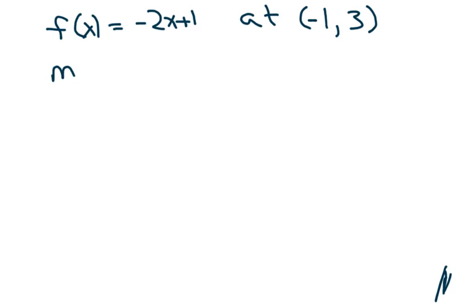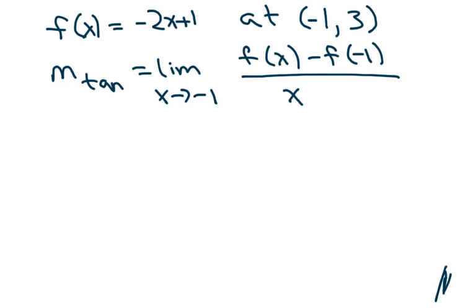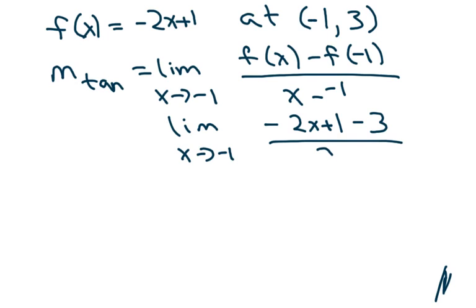So we're going to find the slope of the tangent line first. We're taking the limit as x approaches negative 1 of f of x minus f of negative 1 over x minus a negative 1. So that gives us the limit as x approaches negative 1 of f of x, which is negative 2x plus 1 minus, and you plug in negative 1, and you're going to get 2 plus 1 is 3. So minus 3, and this is going to be x plus 1.